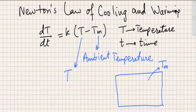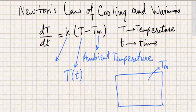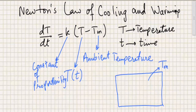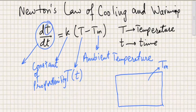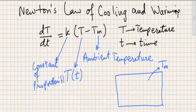This is called the ambient temperature, so for all experiments this temperature Tm is not going to change, whereas T is a function of time — we could write capital T of t. This k is the constant of proportionality, and this term refers to the change in temperature with respect to change in time. This is all there is to know about the terms in this equation — this is Newton's Law of Cooling and Warming.